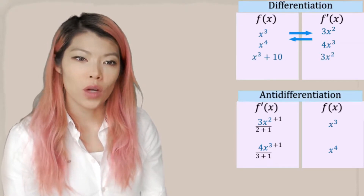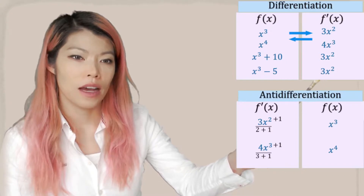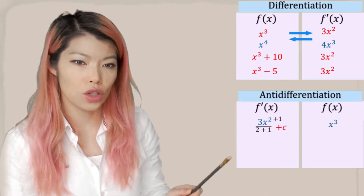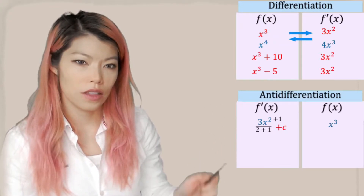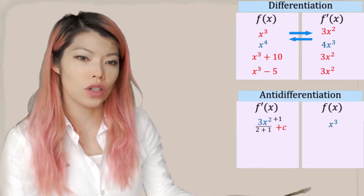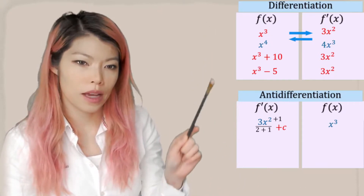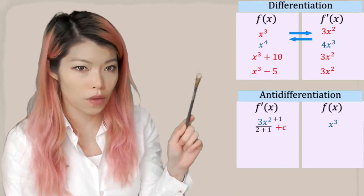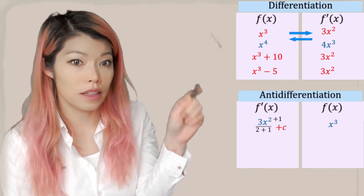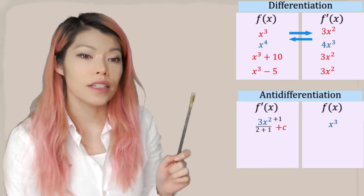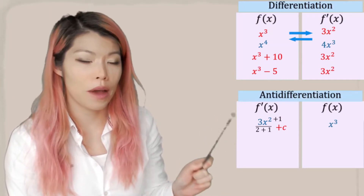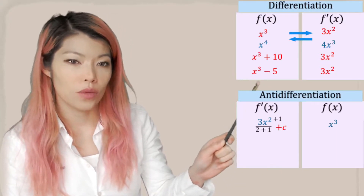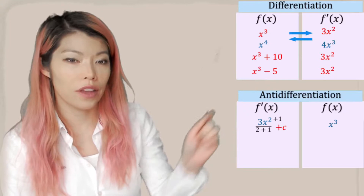However, there are scenarios where we differentiate and obtain the same derivative. So if we had 3x squared as our initial f'(x), how do we know which f(x) it becomes? If we started with 3x squared, how do you know that it came from x cubed minus 5, or x cubed plus 5, or x cubed plus 0? Well, we don't. So when we anti-differentiate, we don't just add 1 to the power and divide by the new power — we also have to add c, because we don't know what the constant is.